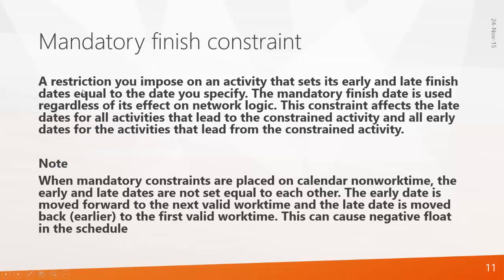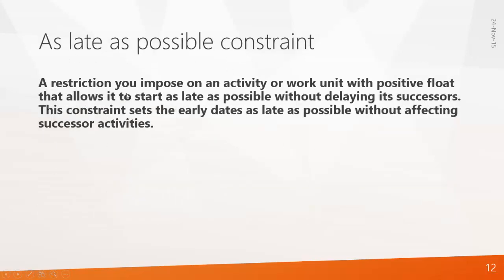The Mandatory Finish constraint sets an activity's early and late finish dates equal to the date you specify, regardless of its effect on network logic. This constraint affects the late dates of all activities leading to the constrained activity and all early dates for activities leading from it. The As Late As Possible constraint is a restriction imposed on an activity with positive float that allows it to start as late as possible without delaying its successors, setting early dates as late as possible without affecting successor activities.